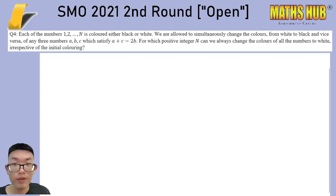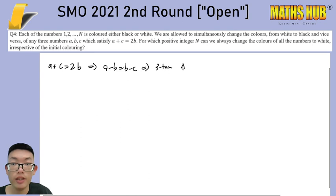It's a game where you have a bunch of numbers from one to n and you're allowed to change the colors of any three numbers which satisfy a plus c equals to two b. To help with intuition, just note that a plus c equals to two b means that a minus b equals to b minus c, which means it is just a three-term arithmetic progression.